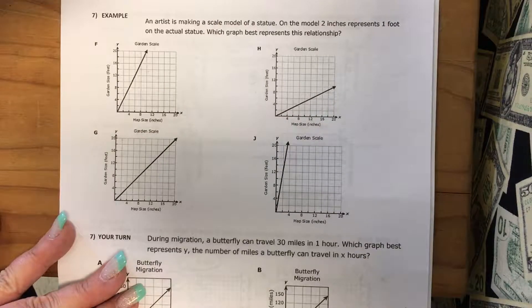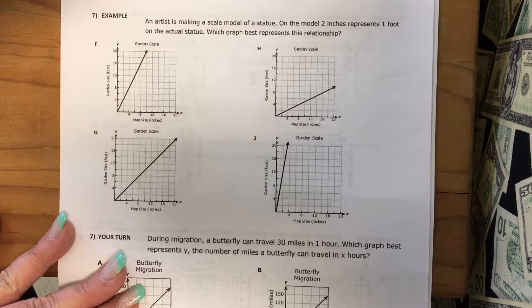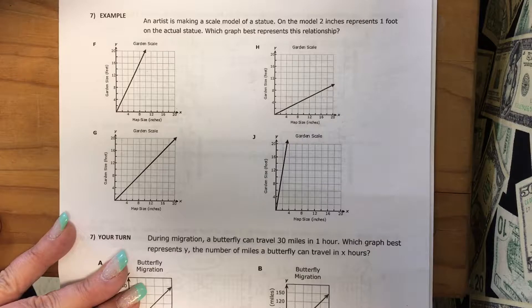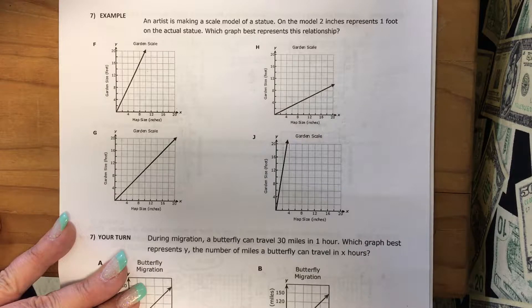Unit 3 Review, Day 2, Example 7. An artist is making a scale model of a statue. On the model, 2 inches represents 1 foot on the actual statue. Which graph best represents this relationship?